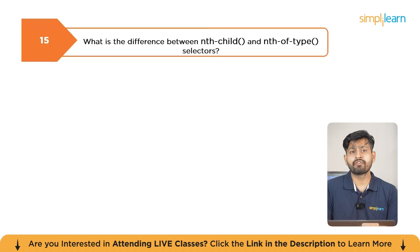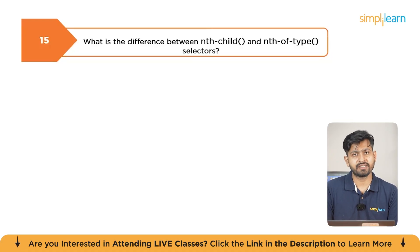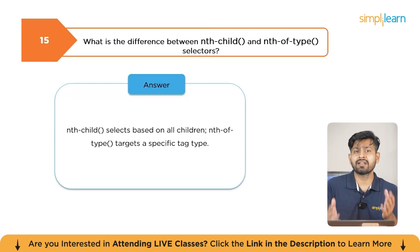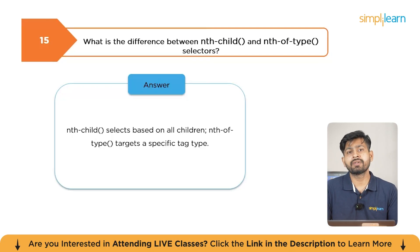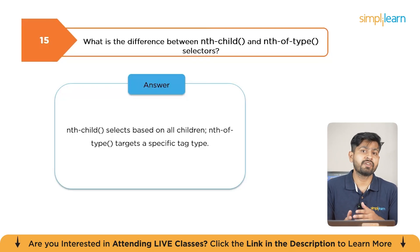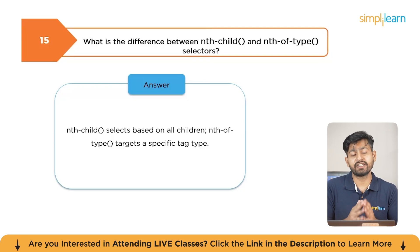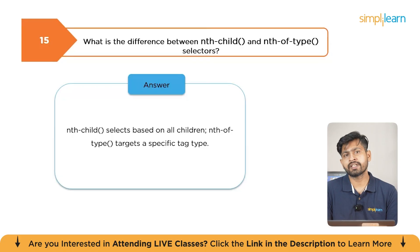What is the difference between nth-child and nth-of-type selectors in CSS? nth-child targets elements based on their position in the parent regardless of type, whereas nth-of-type targets elements of a specific type. For example, div:nth-of-type(2) selects the second div, while div:nth-child(2) selects the second child element of any type.